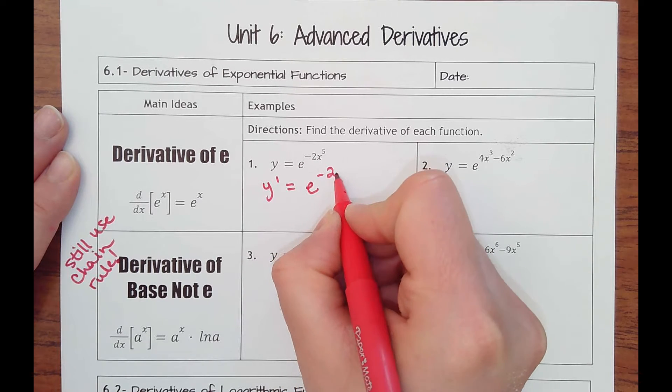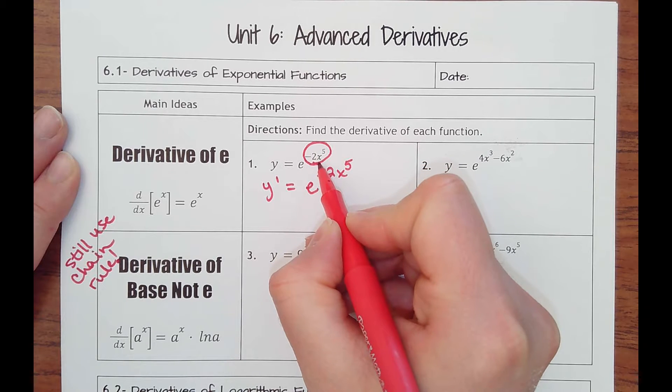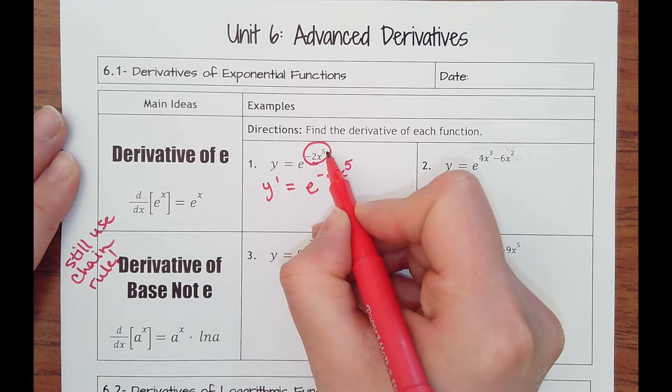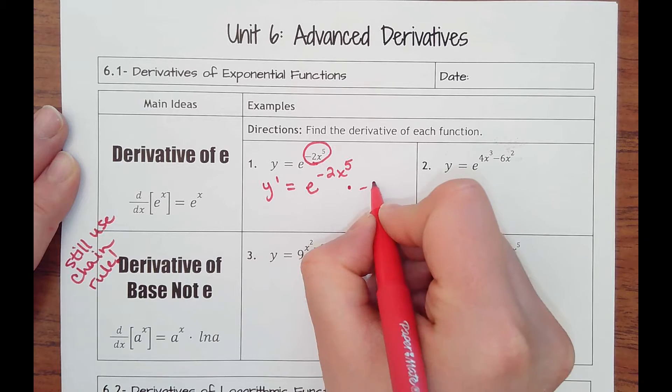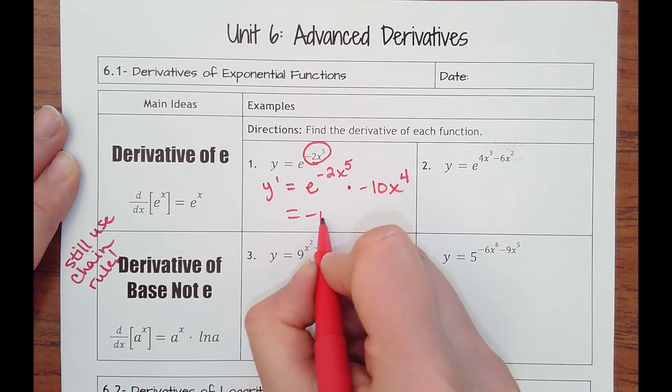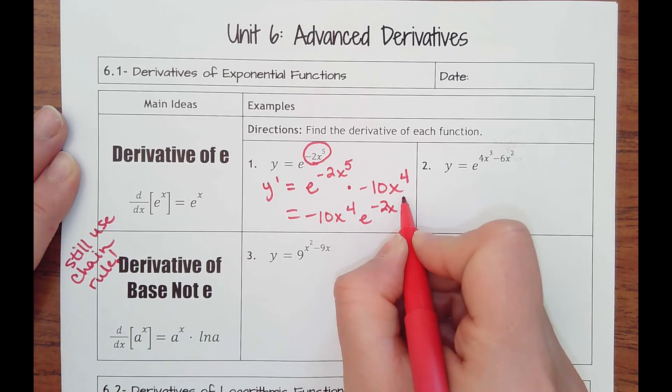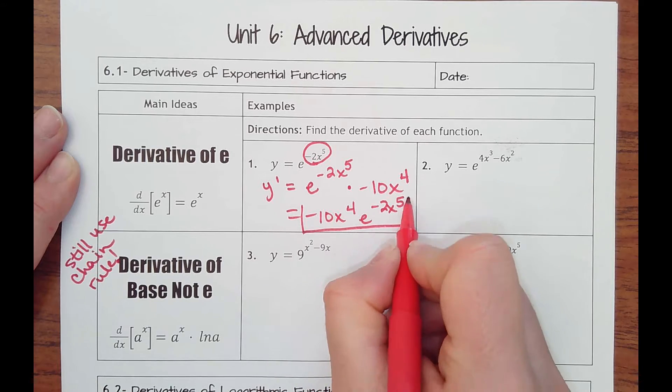So I would just write it again, but then I have to apply the chain rule with the exponent, so that would be negative 10x to the fourth. So you can put it in like that, or you could bring that negative 10x to the fourth in front, times e to the negative 2x to the fifth. Either way.